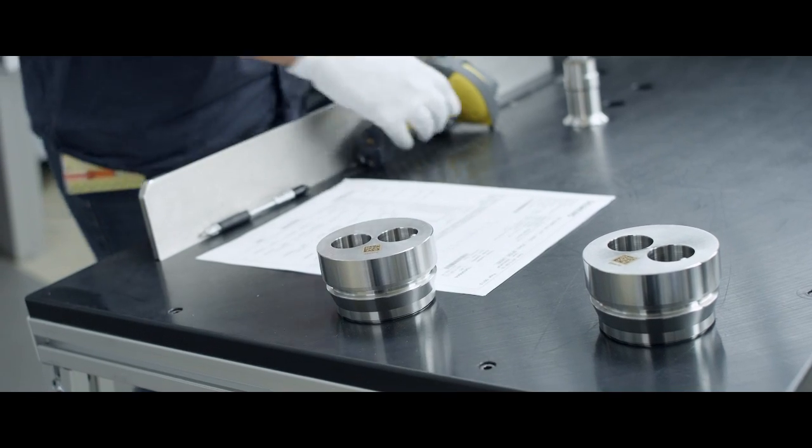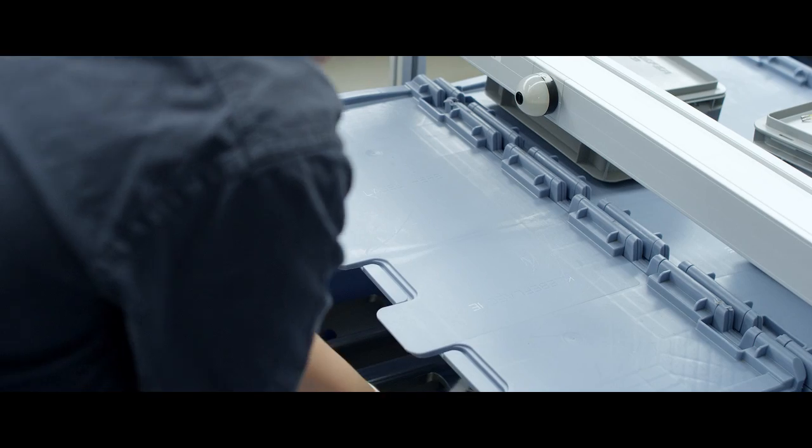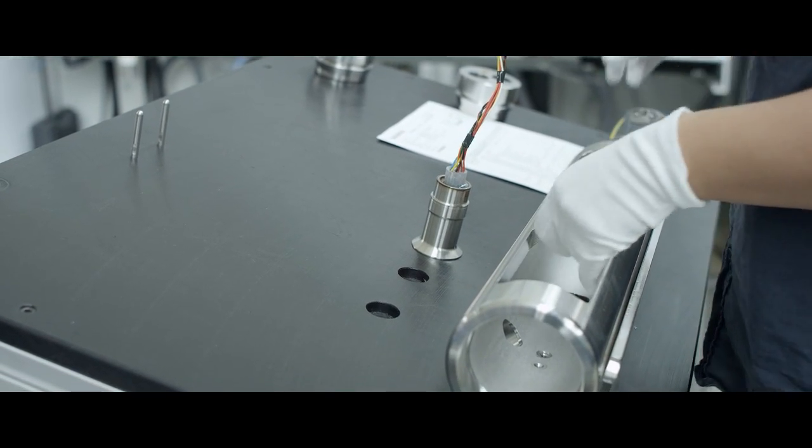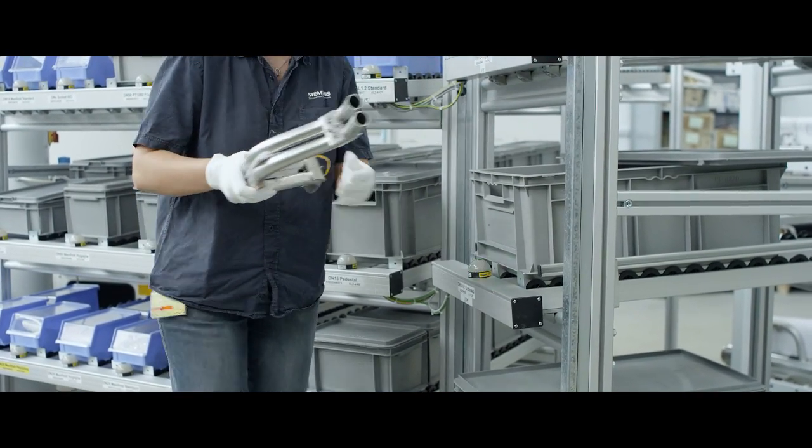Every step is documented. This means every component in a Siemens Coriolis flow meter is traceable. Every component is scanned prior to use and also scanned frequently when it is assembled to other parts. And that is basically the key to securing our high quality level.